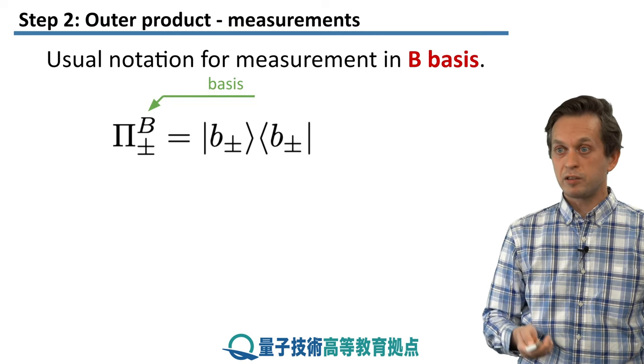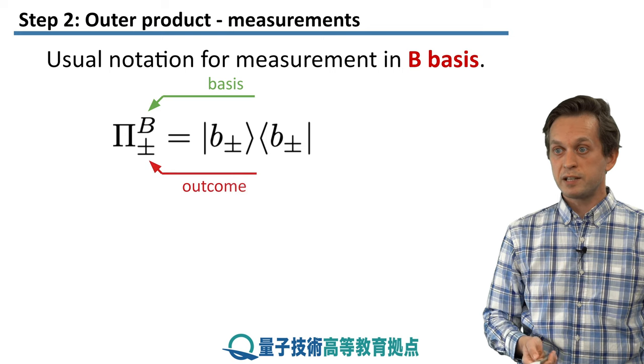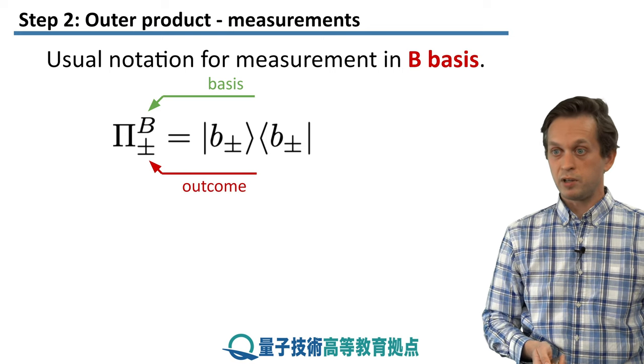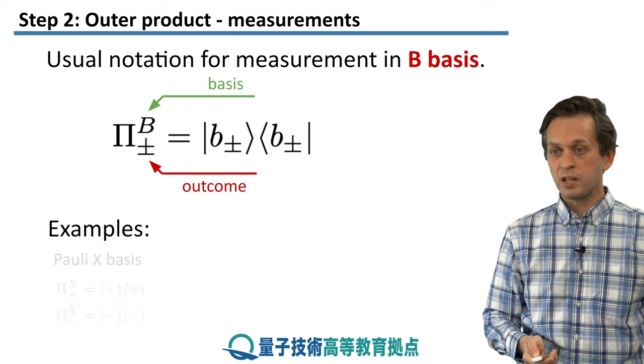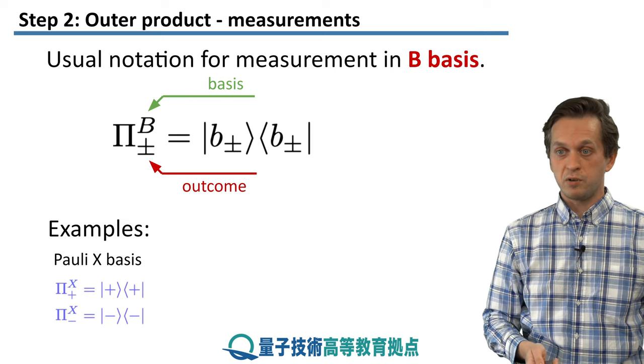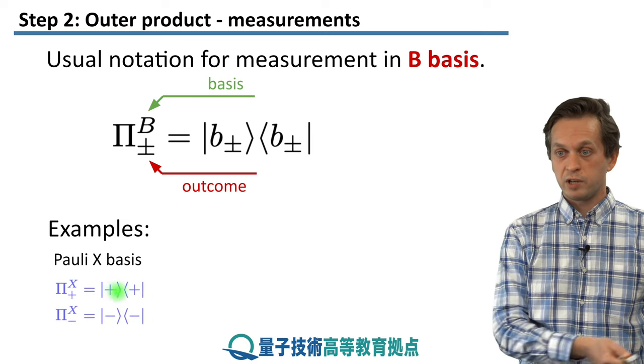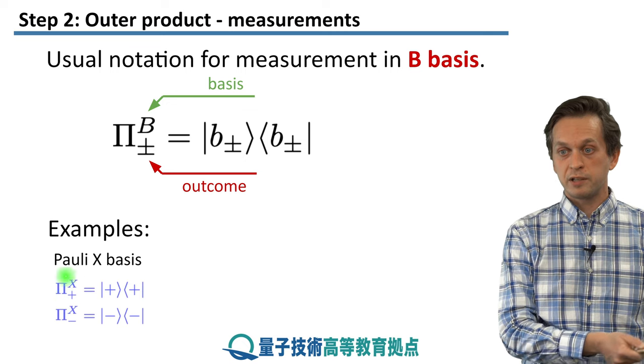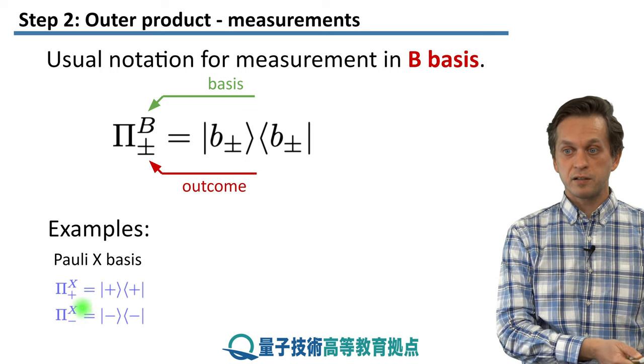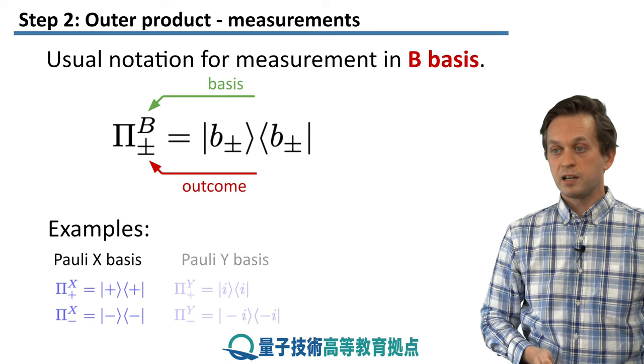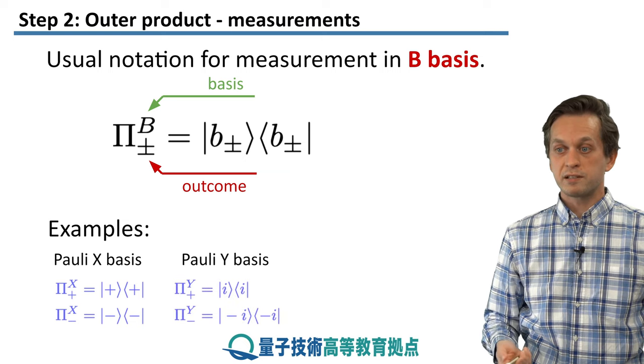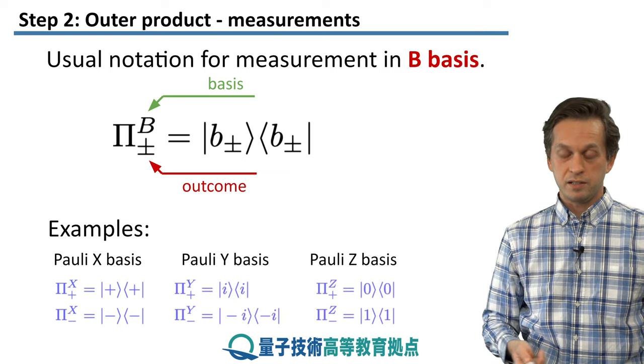So, as I said, the top index designates our basis, the bottom the outcome of the measurement. And here are some examples which we have seen already. But just to give you a clear picture, the outer product of plus plus we can just succinctly write as this for the minus outcome like that. And in a similar way for the y basis and the z basis.